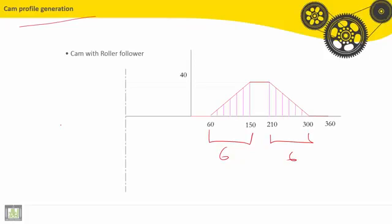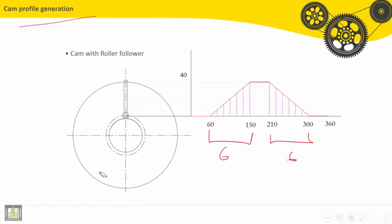This is the axis of the follower. We will project these intervals here. And we have to draw, first of all, the base circle and the follower here with the roller. After that, here we have axis of the cam. This circle with the maximum stroke of the follower.